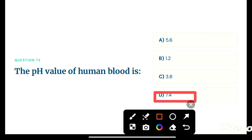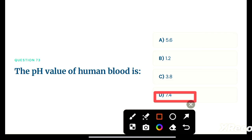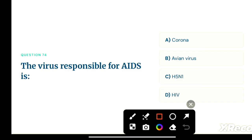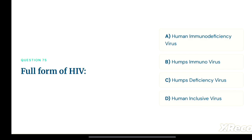Next question: the virus responsible for AIDS is — option A: corona, option B: avian virus, option C: H5N1, option D: HIV. The correct answer is option D, HIV. The HIV virus causes AIDS. Option D is the correct answer.